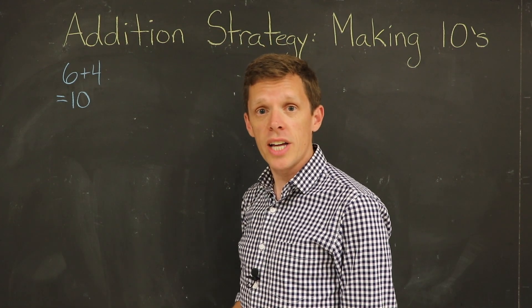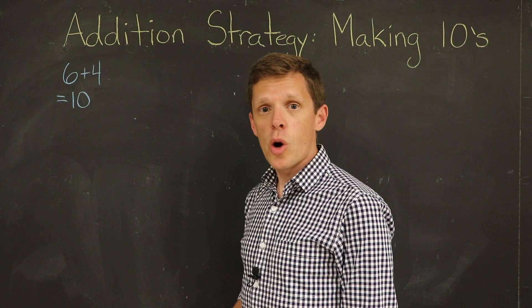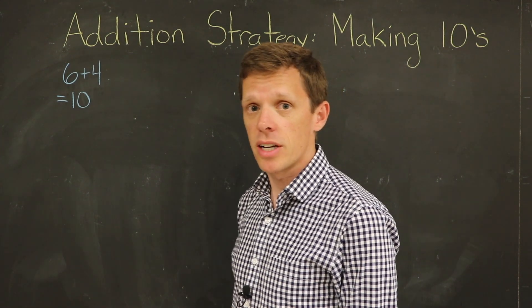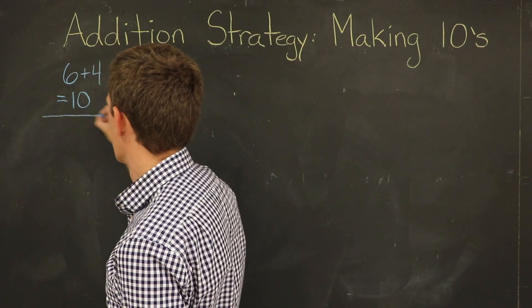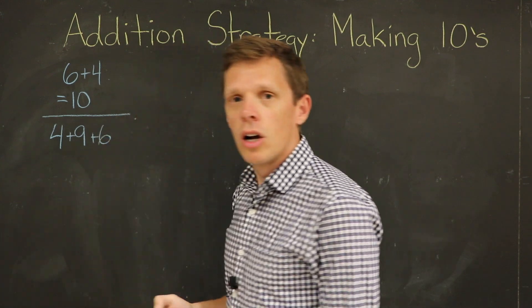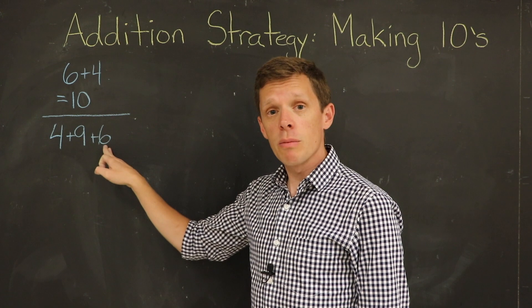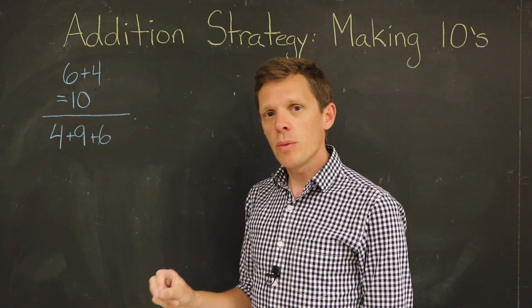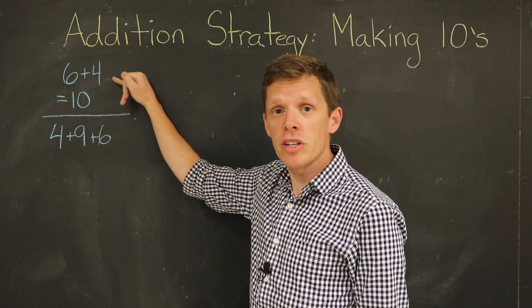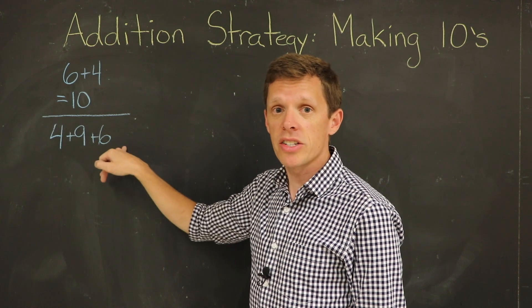So six plus four equals ten. Let's take a look at another example where we're going to add three numbers together — four plus nine plus six. When you see a question like this where you're adding three numbers, you want to ask yourself: what numbers can I add together to make a ten? We know from our previous question that six and four make ten, and here we have a four and a six.